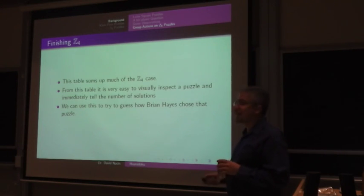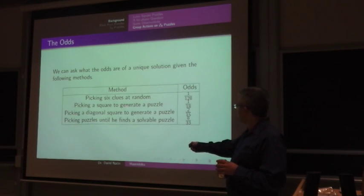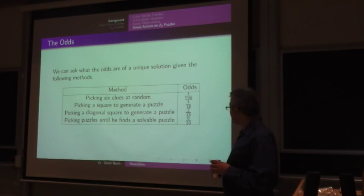From this, we can even try to guess how Brazen, Brian Hayes, ended up choosing the original puzzle. Like, for instance, if he picks six clues at random, we can say what the odds were of getting a puzzle with a unique solution. What if he picked the square? Well, it's better if he started off by picking a diagonal square to generate a puzzle. But we can sort of guess how he ended up with that to begin with.